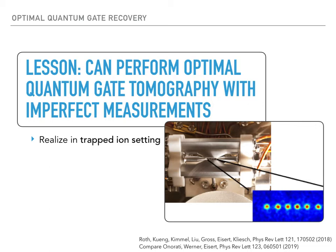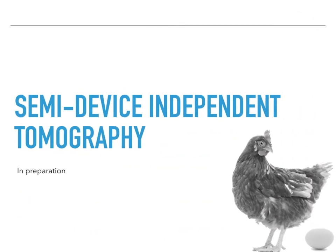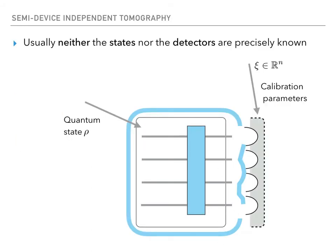This brings me to the second part of the talk, which pushes the main idea even further: that of semi-device-independent — or maybe better, semi-device-dependent — tomography of state recovery with imperfect detectors. In any reasonable prescription, if one is honest, neither the state nor the detectors aimed at learning the state can or will be precisely known.